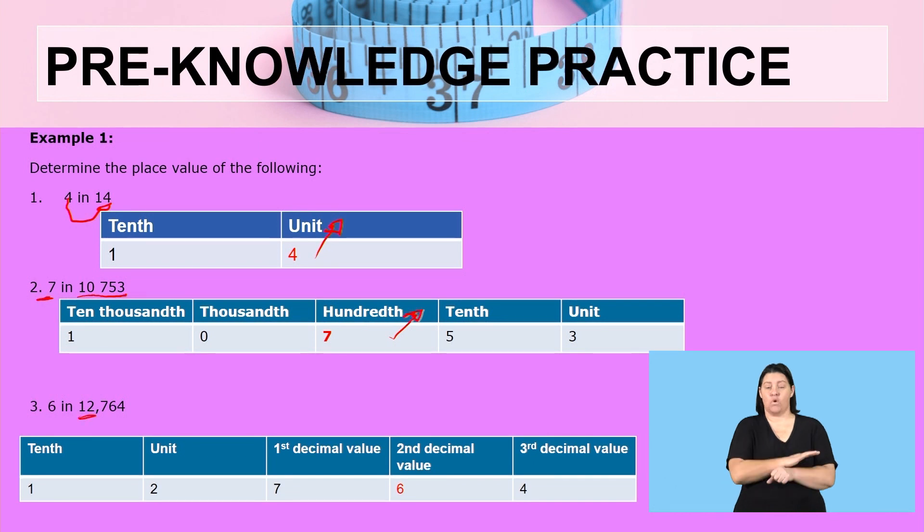Firstly, we look at the whole number. The whole number is 12. In 12, we have the digits 1 and 2, and 1 is a tenth and 2 is a unit. Then we have the decimal values 0,764. After a comma, we have 764.